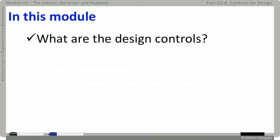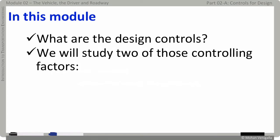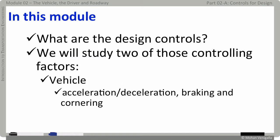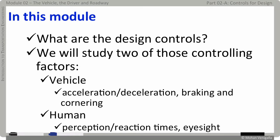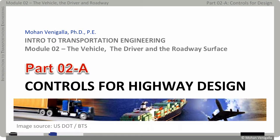In this module, we will first see what the primary design controls for highway are, then study two of those controlling factors in depth. The first is about vehicle capabilities such as acceleration, deceleration, braking, and cornering. The second is about human capabilities such as perception, reaction times, eyesight, etc. That brings us to part 2a on controls for highway design.